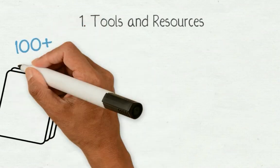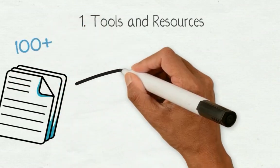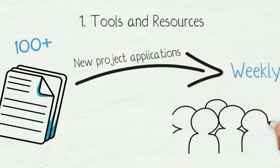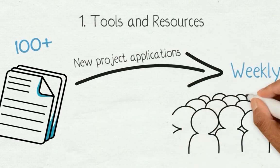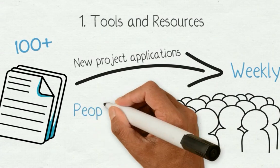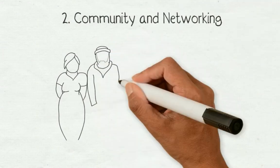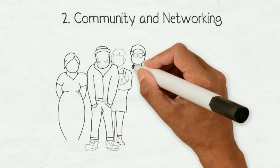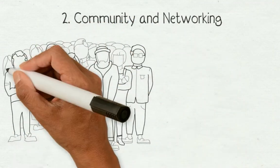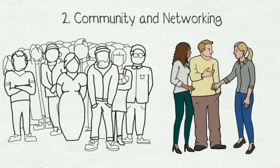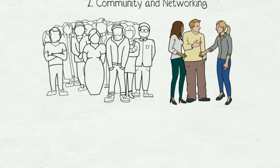OWASP has 100-plus active projects and new project applications are submitted weekly. Projects are open source and are built by our community of volunteers, people just like you. There are hundreds of local chapters worldwide and thousands of members. Meetings are free and open to everyone.